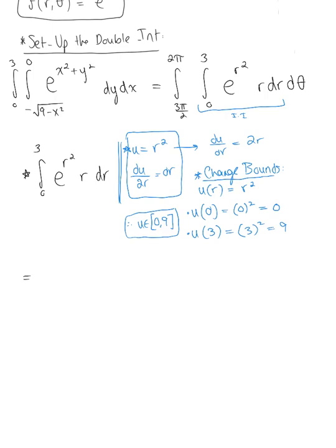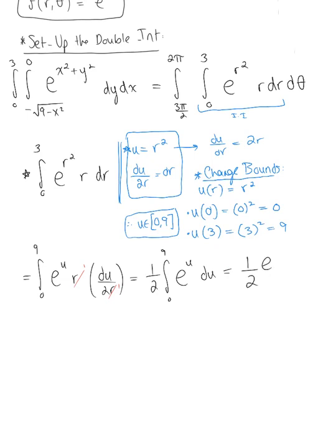Plugging into our integral, this becomes the integral from 0 to 9 of e to the u times r, multiplied by du over 2r. The r's cancel, and we factor out 1/2: we have 1/2 times the integral from 0 to 9 of e to the u du. The antiderivative gives 1/2 times e to the u evaluated from 0 to 9. Evaluating: 1/2 times (e to the 9 minus e to the 0), and since e to the 0 equals 1, this leaves us with (e to the 9 minus 1) over 2.